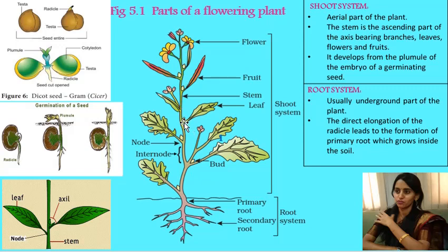Another type of bud is called the axillary bud. Look at this — the stem has a node from which a leaf has developed. The angle formed between the main stem and a leaf is known as the axil. The bud present in the axil is known as the axillary bud. This axillary bud may develop into a leaf, a branch, or it may develop into an inflorescence, which is a natural cluster of flowers.